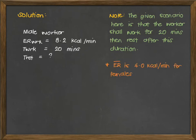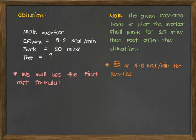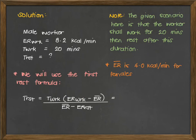Also take note that ER bar is 4 kcal per minute for females. Since the example uses a male worker, we will continue to use the value of 5 for ER bar. Using the first rest formula: T rest equals T work times (ER work minus ER bar), all over (ER bar minus ER rest). This gives 18.29 minutes.